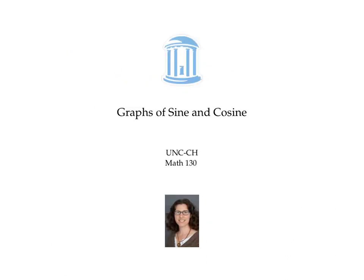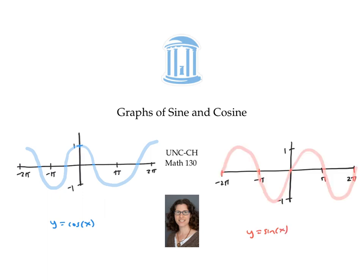In this video, we graphed y equals cosine of x and y equals sine of x, and observed that they both have a midline at y equals zero, an amplitude of one, and a period of two pi.